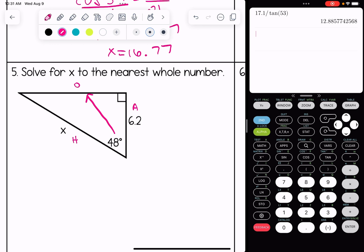This is a cosine problem because I have adjacent and hypotenuse, AH. So cosine is equal to the adjacent over the hypotenuse.